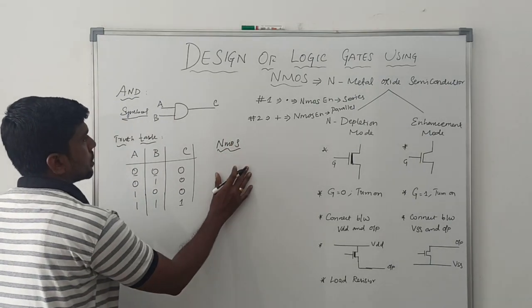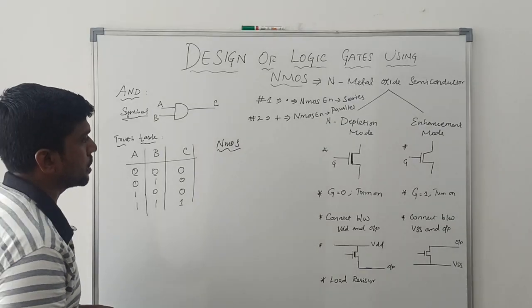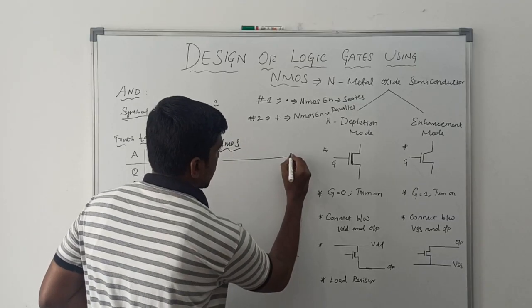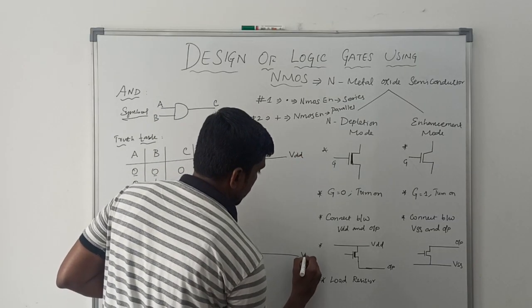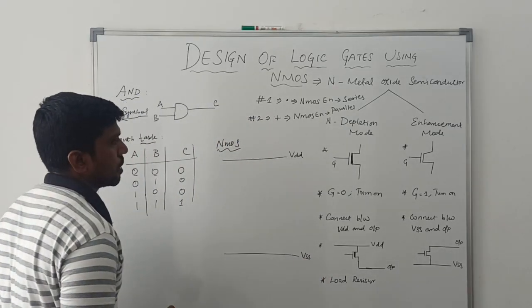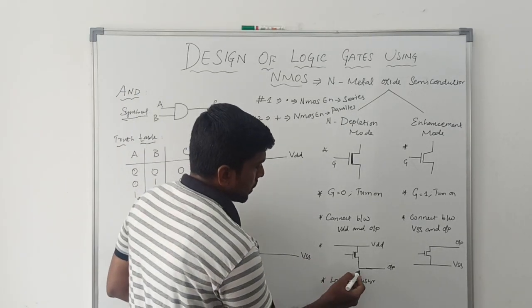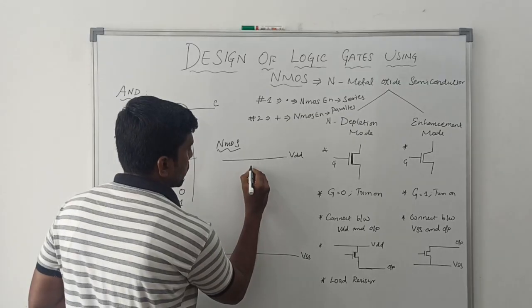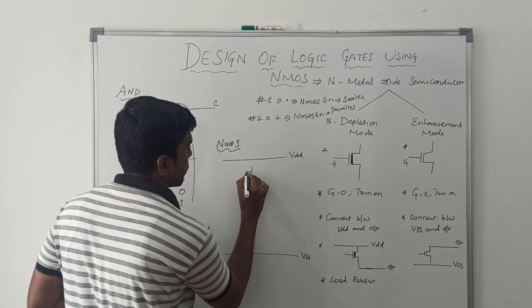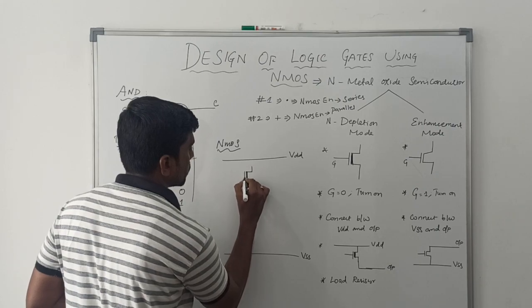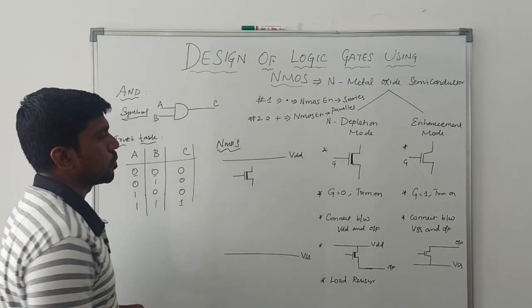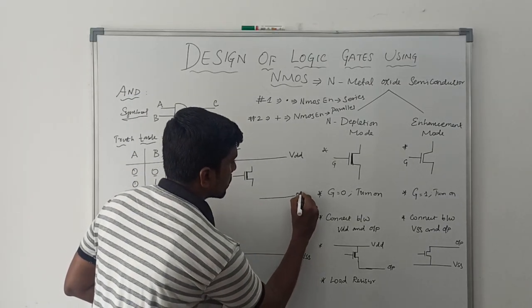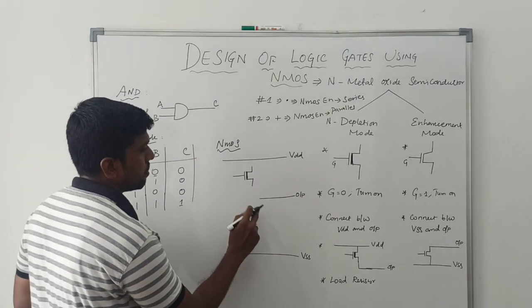Now I am going to draw the NMOS logic for the AND gate. First I draw power supply VDD and VSS. As already mentioned, the depletion mode transistor is connected between VDD and the output. So first I draw the symbol of the depletion mode transistor, and this depletion mode transistor is connected between VDD and the output line.